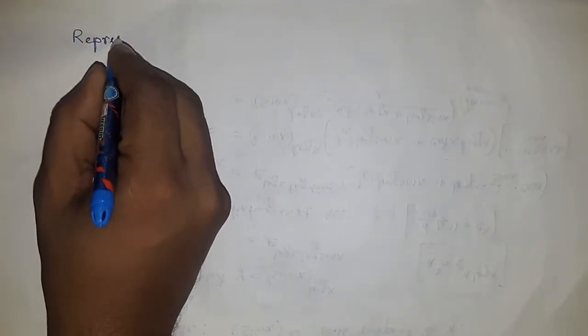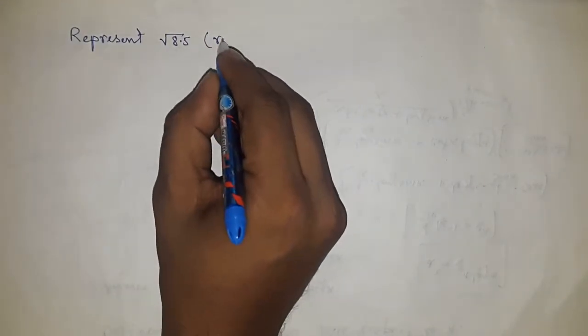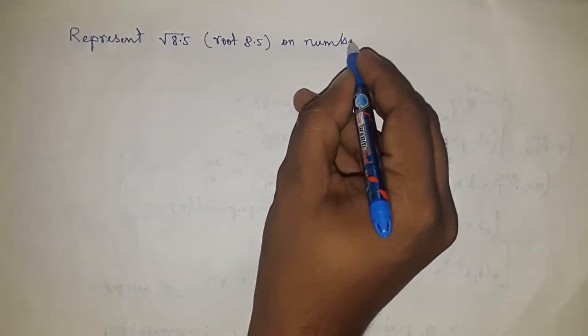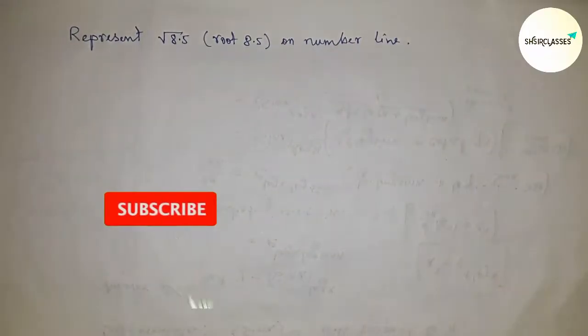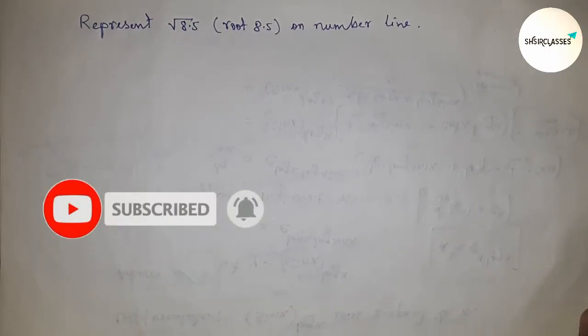Hi everyone, welcome to SS3 classes. Today we're talking about the representation of √8.5 on a number line. Before starting the video, I have one request: please subscribe to the channel and press the bell icon.